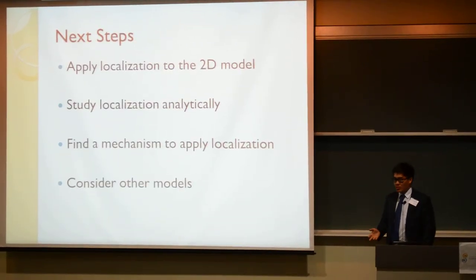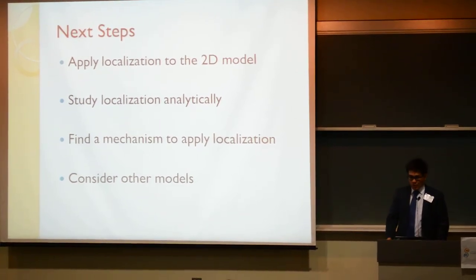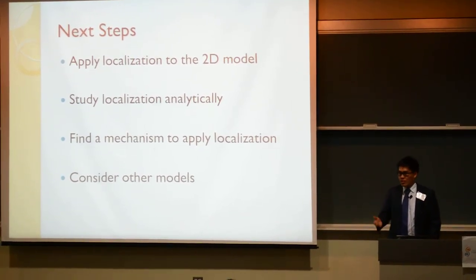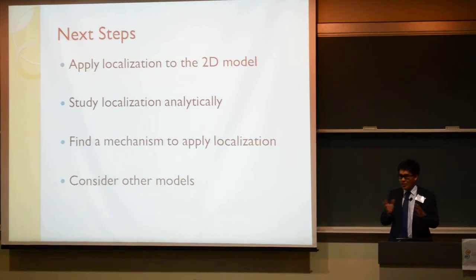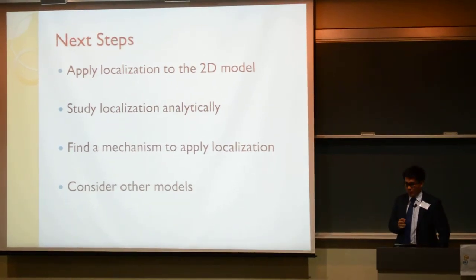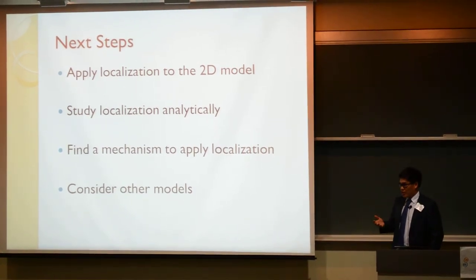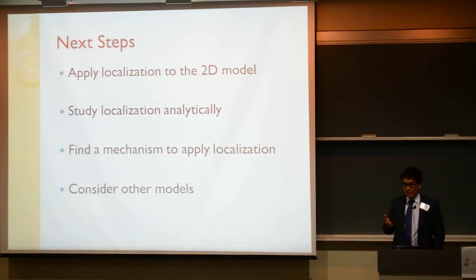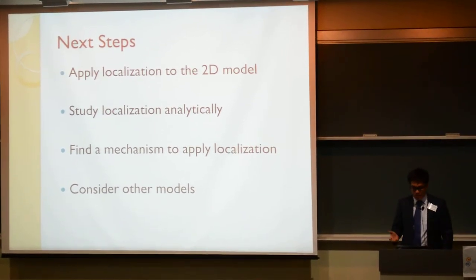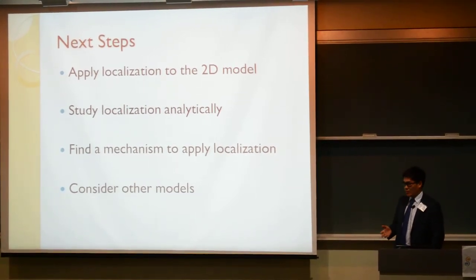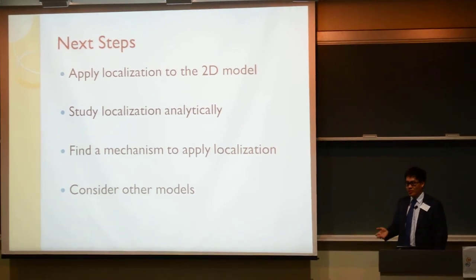That was just for the one-dimensional model. Some of the next steps we want to do is apply localization to the 2D model. After that, we can study localization analytically, see if there's an optimized spread that we would prefer. We also need to find a mechanism to actually apply localization, because right now I've only shown that making one parameter random causes localization, but I never explained exactly how to change that parameter — that's something we want to investigate. Finally, this is not the only good model of the brain, so we might want to consider other models and see whether localization is achievable in those as well.